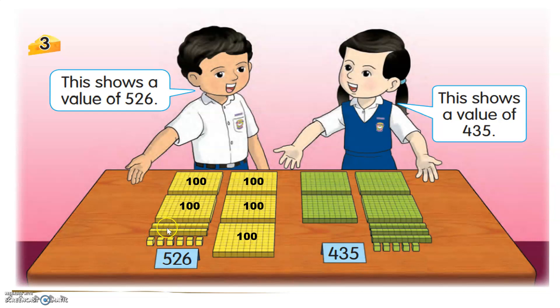The vertical one? 10, 10. So the small cubes here, 1, 2, 3, 4, 5, 6. Let's read together. 100, 200, 300, 400, 500. And how many tens here? 10, 20. So 526. This shows a value of 526.